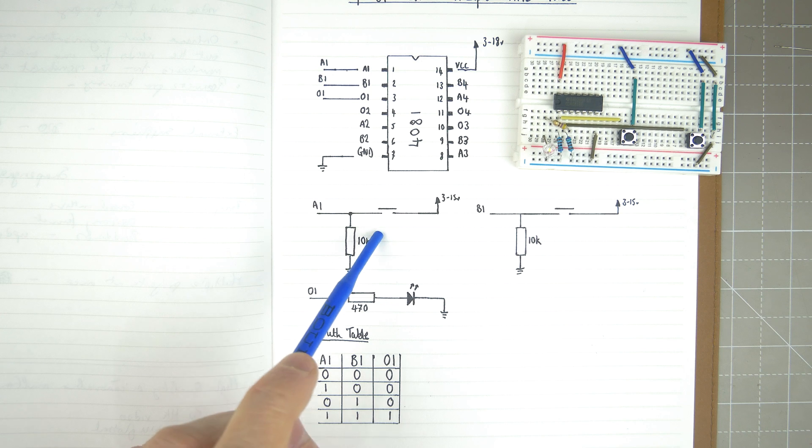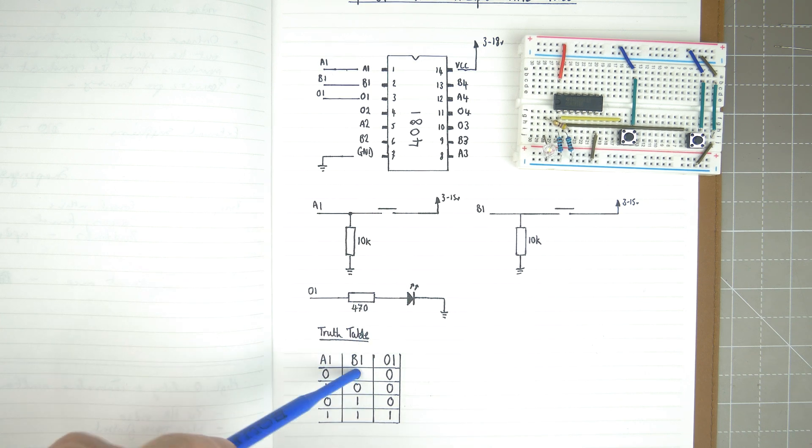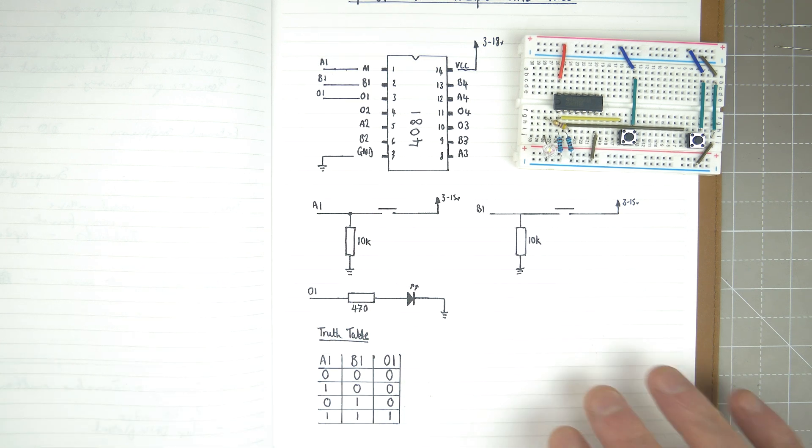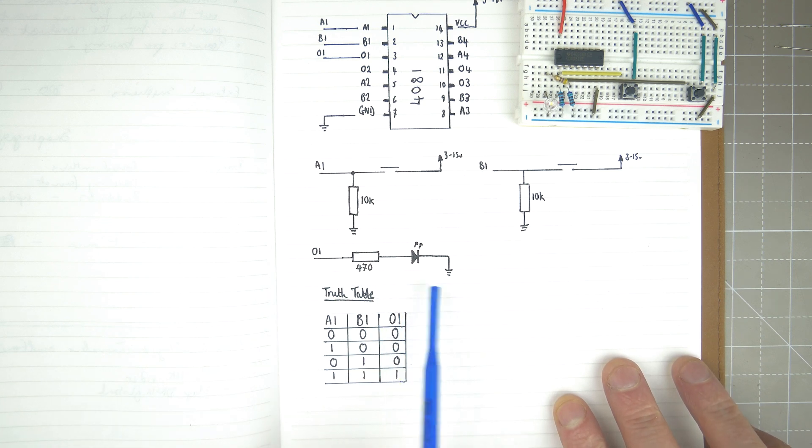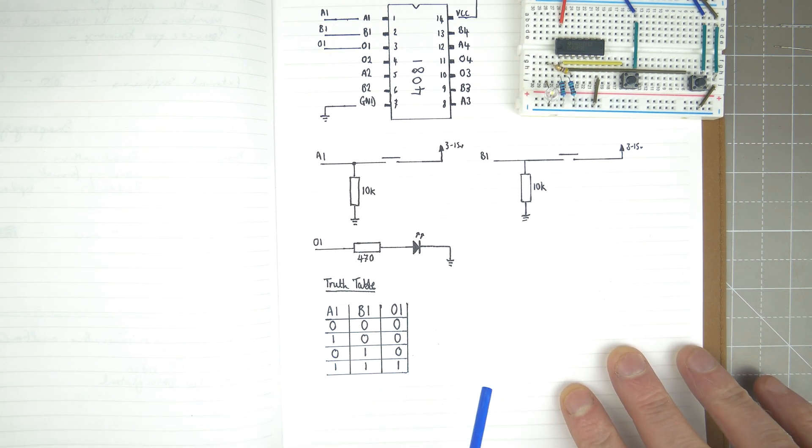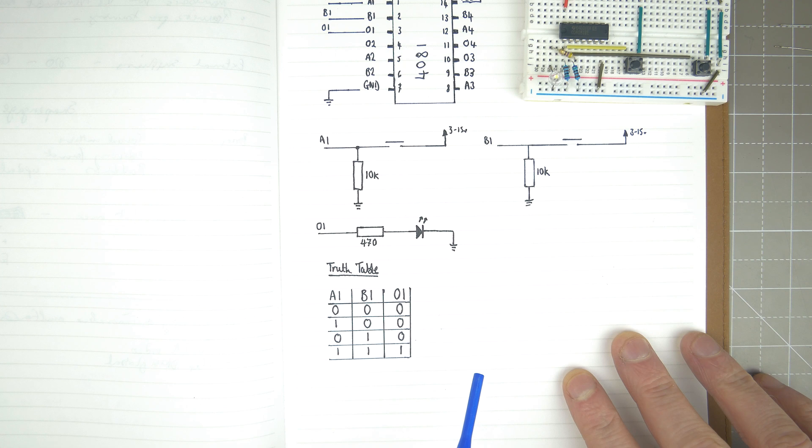Our button, which I've drawn badly here, is connected to VCC. On the output, we've just got an LED with a fairly low current 470 ohm resistor on that.